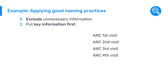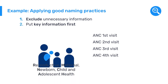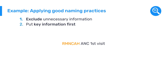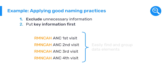Lastly, we could add a prefix that indicates the program this data element belongs to. Since this element belongs to the Reproductive, Maternal, Newborn, Child, and Adolescent Health program — RMNCAH in short — we can add the prefix RMNCAH to the data element. We would then have 'RMNCAH ANC 1st visit.' In particular, this will assist system administrators as it will allow them to find and group data elements together for various maintenance operations.